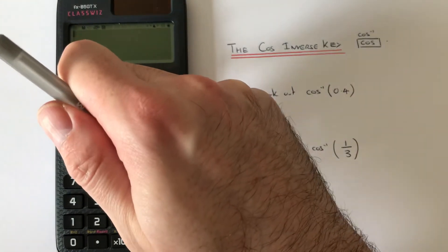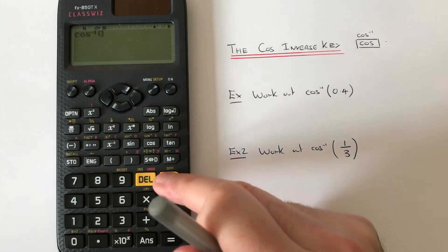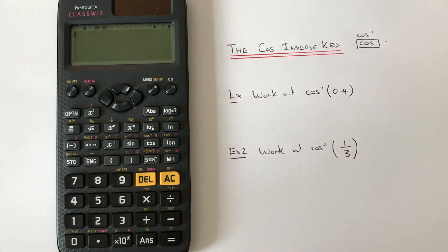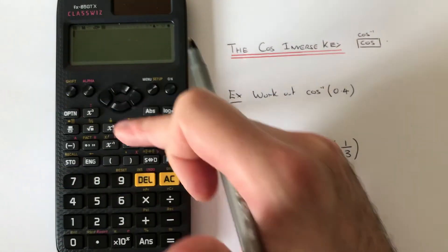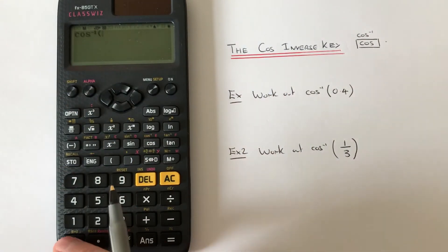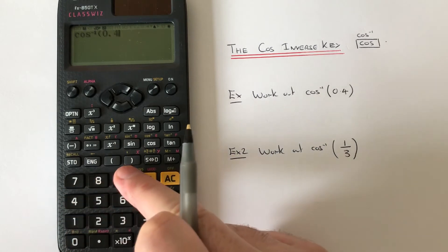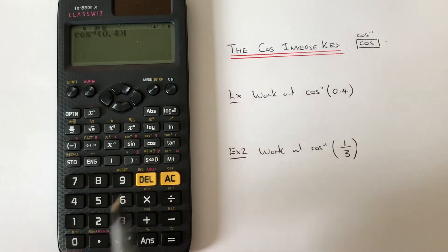So we press shift cos. Let's have a look at the two examples here. We've got to work out cos inverse of 0.4, so we go shift cos and then type our decimal in, close your bracket at the end.